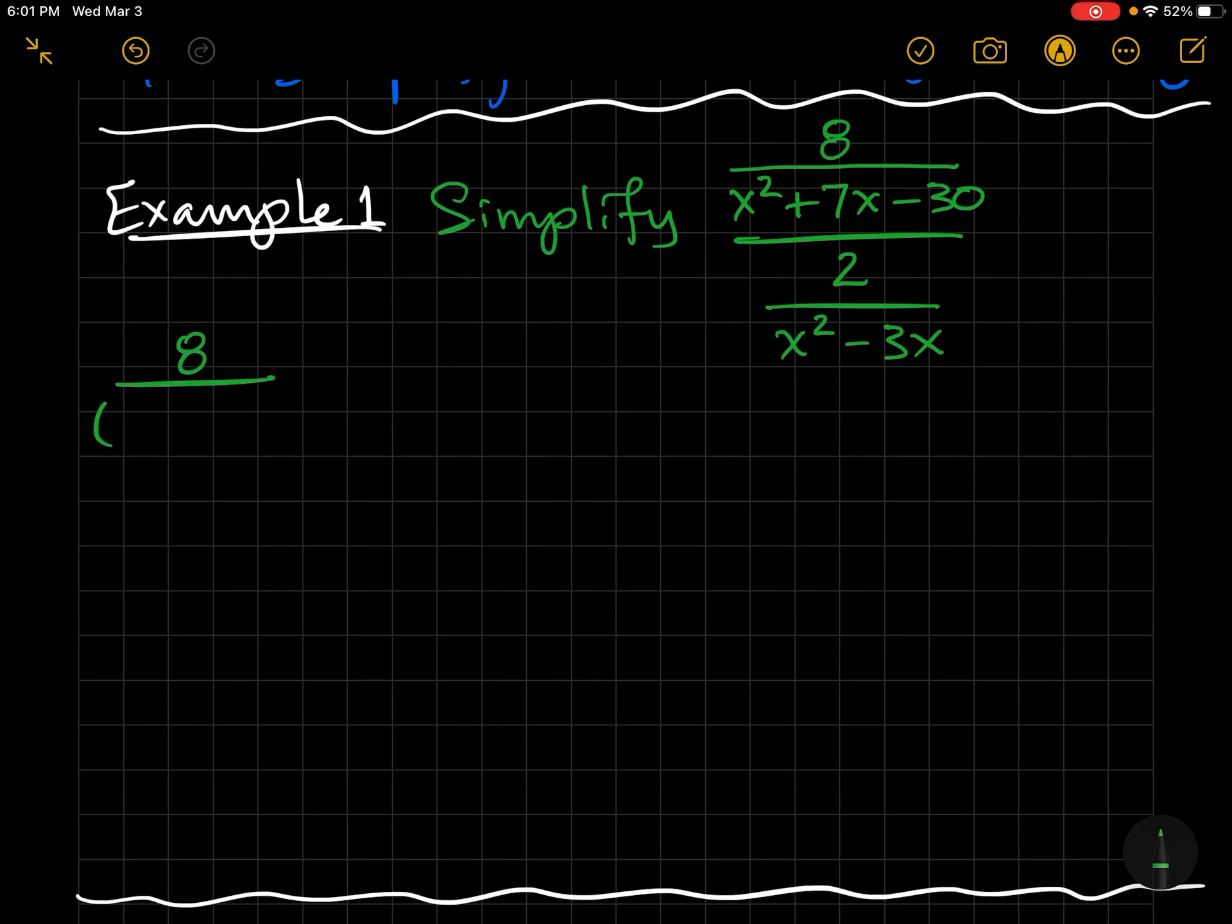And I'm going to go ahead and factor the denominator while I'm at it. So let's see if I do a quick diamond. That'll be x plus 10, x minus 3.